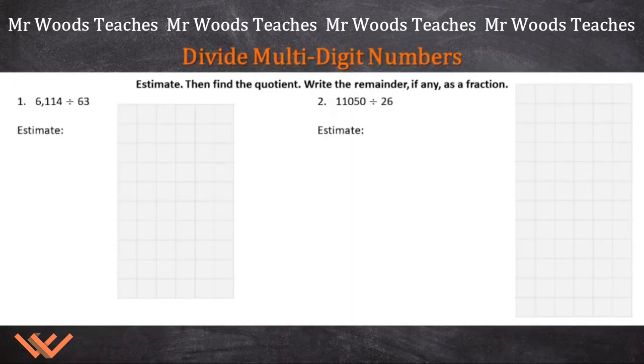Let's take a look here. Divide multi-digit numbers. Number one, 6,114 divided by 63. Wait, look here. There's some directions here. This is telling me what I need to know. It says estimate. Then find the quotient. Write the remainder, if any, as a fraction. So those are the steps that we need to go through when we evaluate these problems. So let's get started.